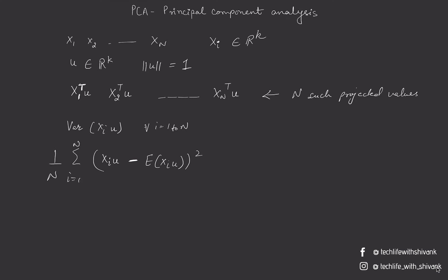So we have to find a direction u such that this expression is minimized. Let us assume that the expected value of xi is 0, that is the average of these data points is 0. So we have already mean-centered them, and if the average of these data points is 0, this also implies that the average of the projected data points would also be 0 because it is a linear projection.